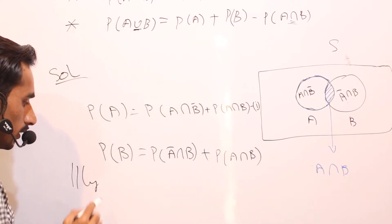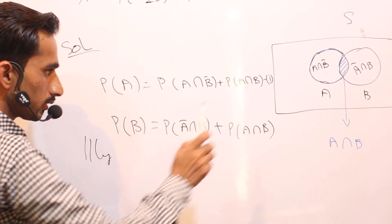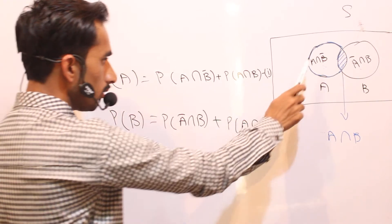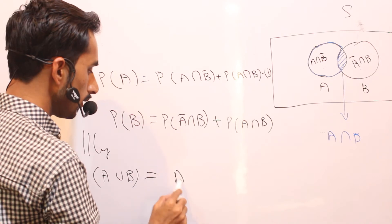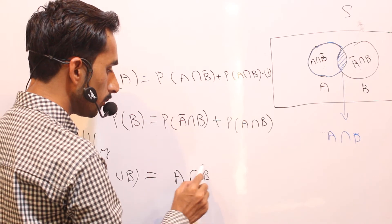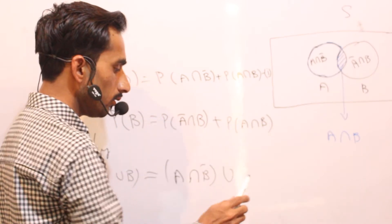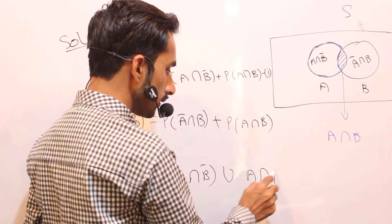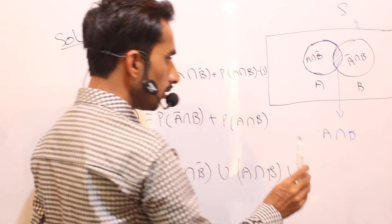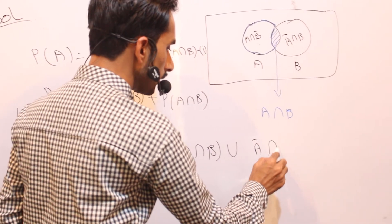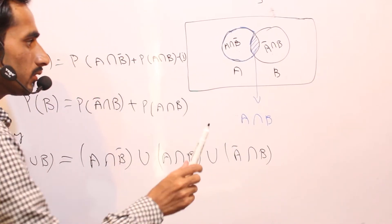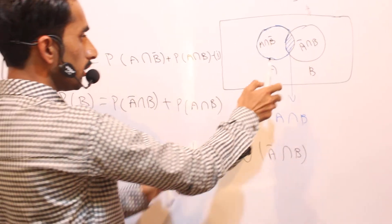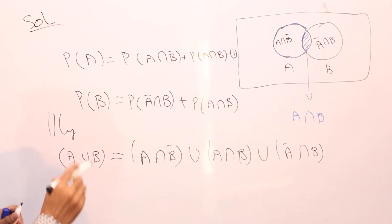Similarly, A union B is composed of three portions. It can be written as A union B equals the portion A intersection B-bar, union A intersection B, union A-bar intersection B. It is composed of portion one, portion two, and portion three. Now we apply probability to these.